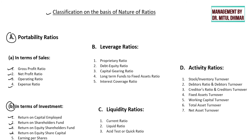Continuing profitability ratios: return on equity share capital and earnings per share. The second category is leverage ratios, which indicate the level of debt against several particulars of the financial statement. This covers proprietary ratio, debt-equity ratio, capital gearing ratio, long-term funds to fixed asset ratio, and interest coverage ratio.